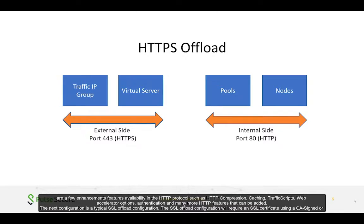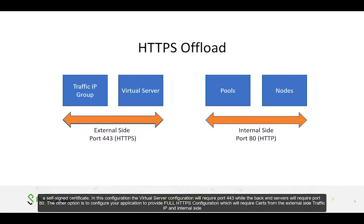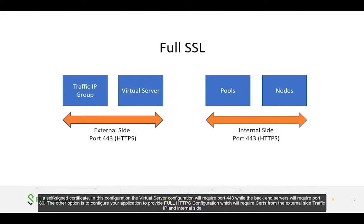The next configuration is a typical SSL offload configuration. This will require an SSL certificate using a CA-signed or self-signed certificate. In this configuration, the virtual server will require port 443 while the backend servers will require port 80. The other option is to configure full HTTPS, which requires certificates on both the external traffic IP side and the internal side.